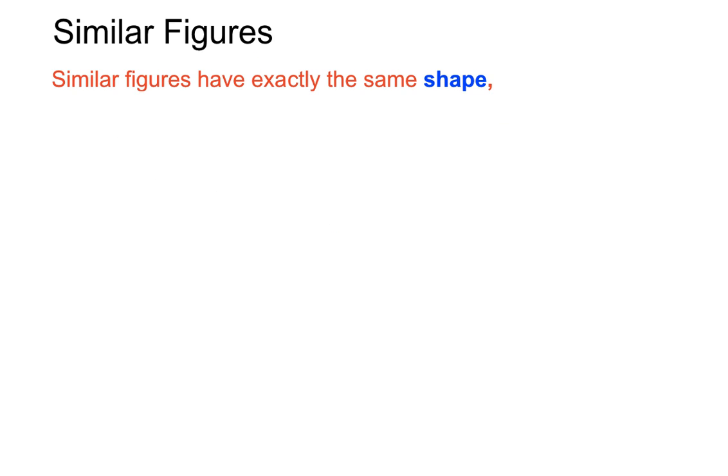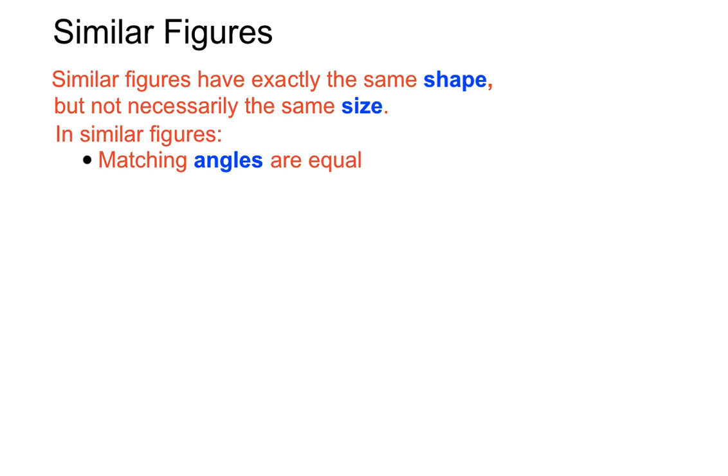So, just to recap, similar figures have exactly the same shape, but not necessarily the same size. They can be twice as big, or a third as big. In similar figures, matching angles are equal, and matching sides are in the same ratio.